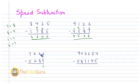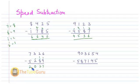Next, two minus nine is not possible, so I take the complement of nine, which is one, and put a dot on the next digit. Two plus one is three. Then three minus three is zero. And seven minus five is two. That's the answer for this example.